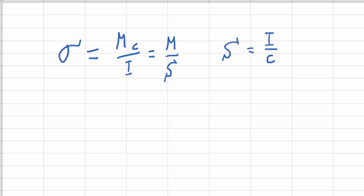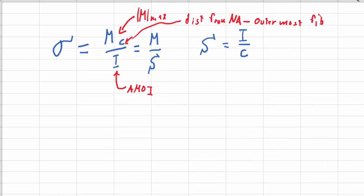Now what are each of these things? This is our maximum bending moment M, this is our area moment of inertia I, and C is the distance from the neutral axis to the outermost fiber. So whatever distance you can get that's the largest from the neutral axis to the outermost fiber.